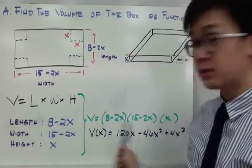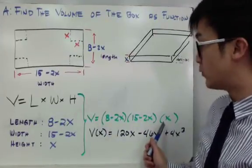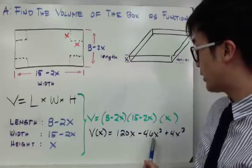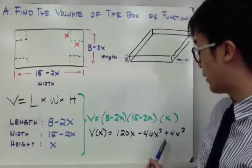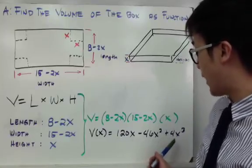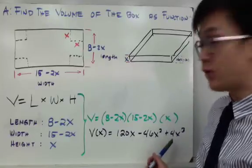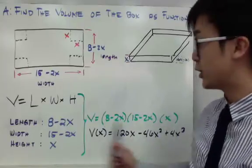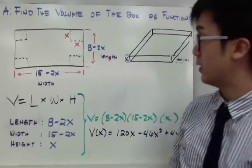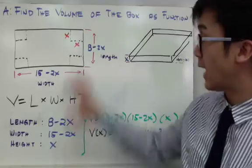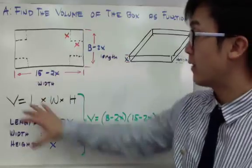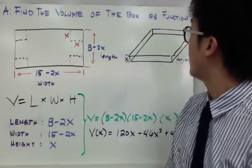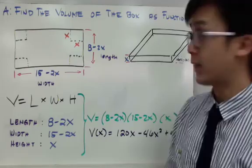To convert this into standard form, we get 120x minus 46x squared plus 4x cubed. You find that by multiplying out each of the terms. That is how we answer letter A — we have found the volume of the open topped box as a function of x.